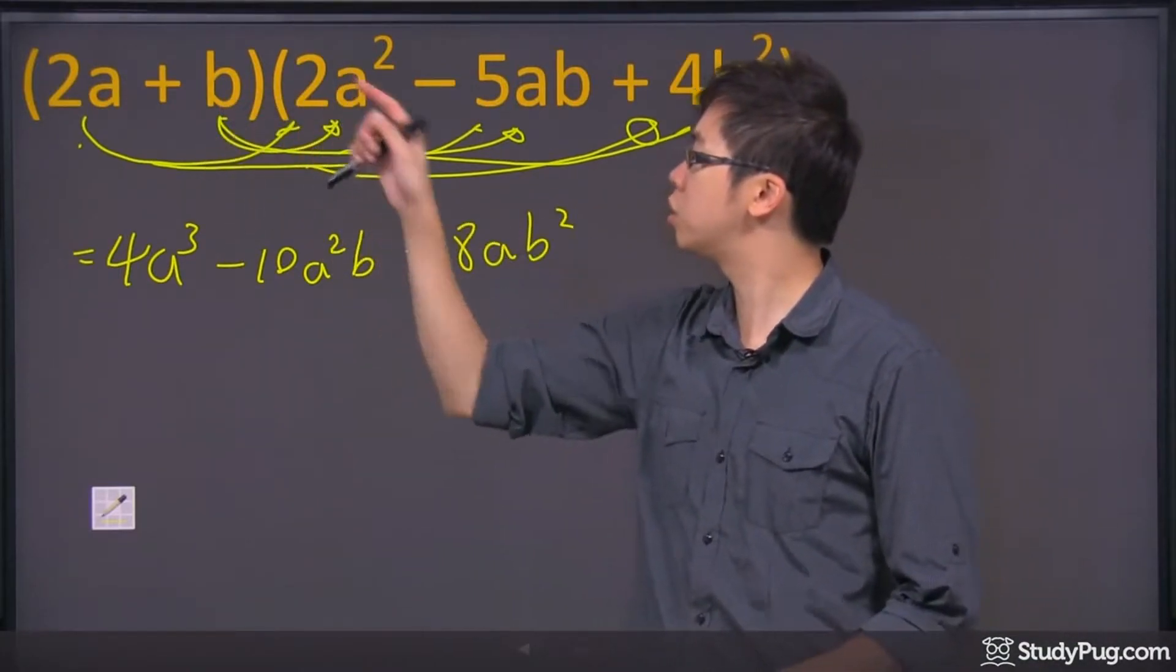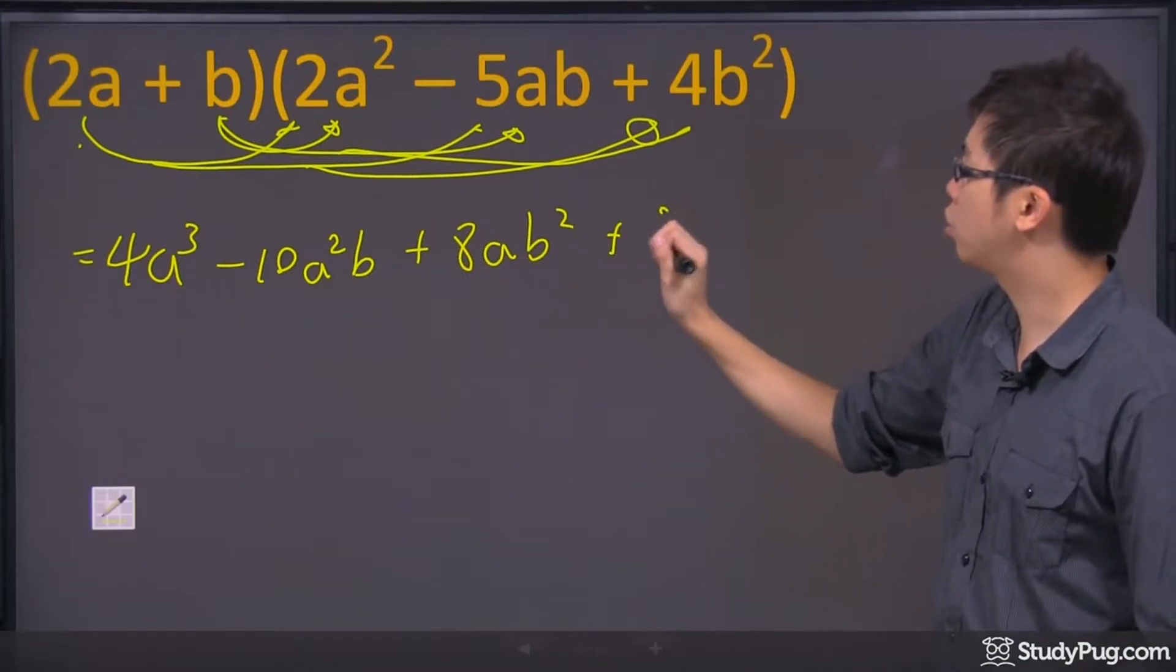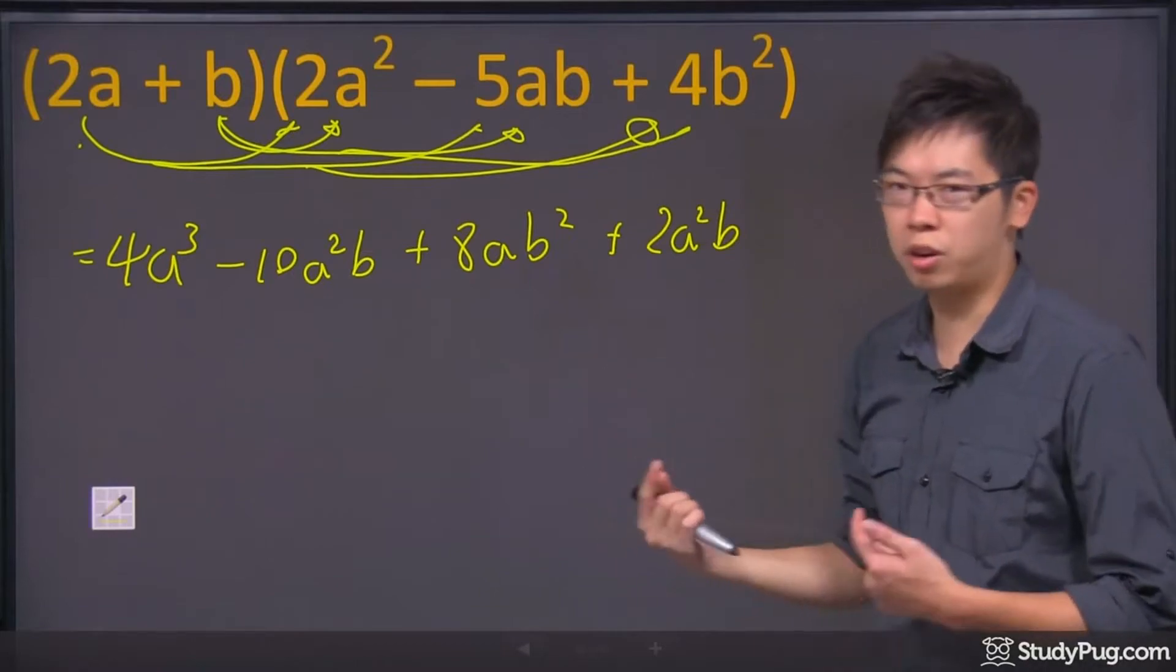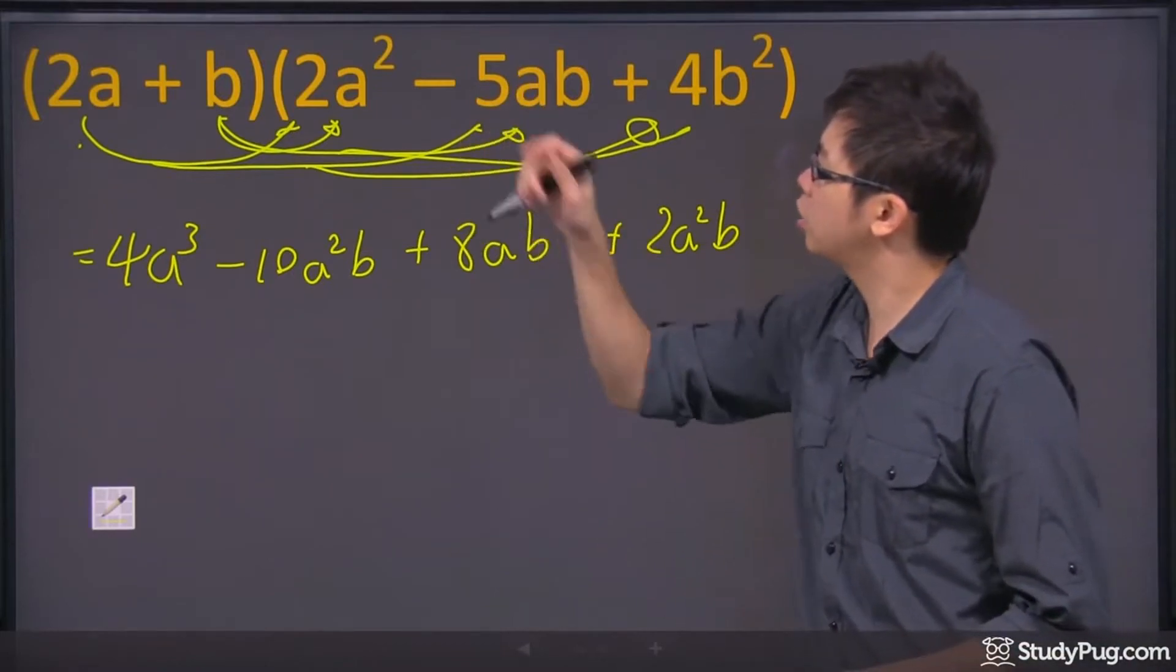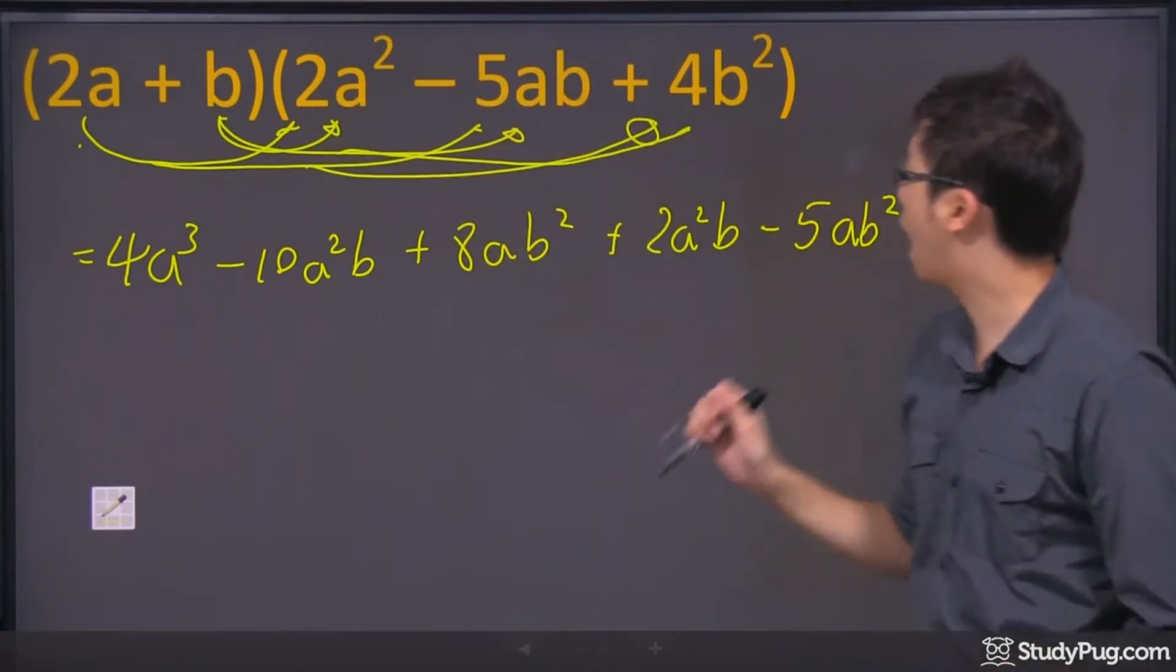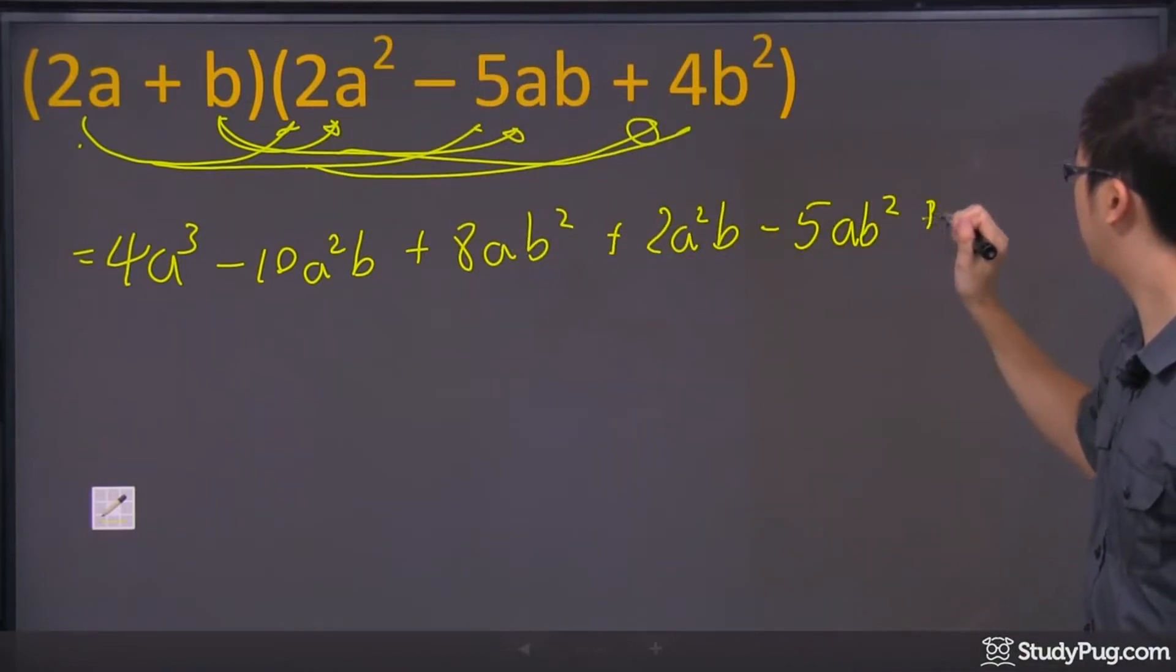The next one, we go b times 2a squared, we got a 2a squared b. I like the a go before, in front of the b. And then the next one, we have the negative 5ab squared, and the last one, we have the 4, and that's going to be a b cubed.